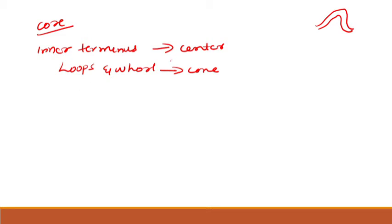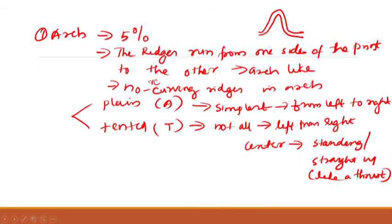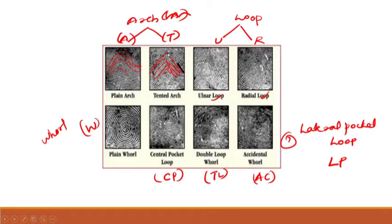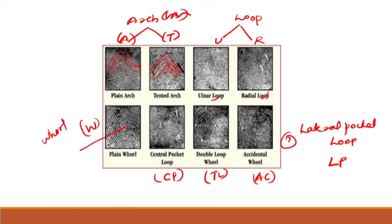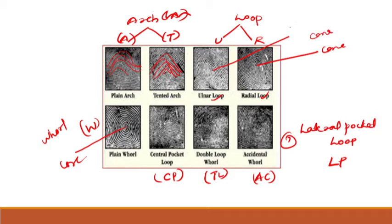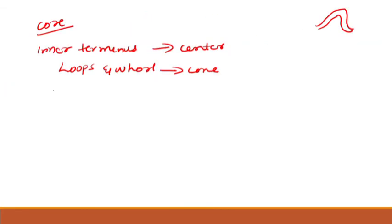The core is the approximate center of the pattern — for example, in a whorl, the innermost portion is the core. Delta is the outer terminus. In a loop, you can see the core at the center region.